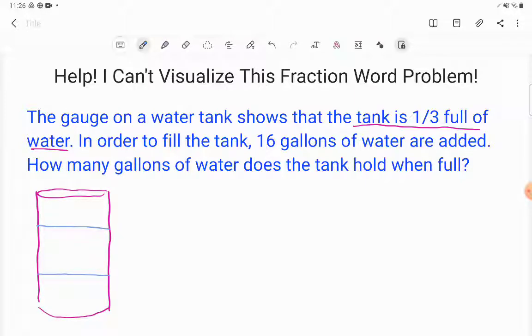One-third, two-thirds, three-thirds. Now, the tank is originally one-third full. So we've got water up to this first line here. Now it says, in order to fill the tank, 16 gallons of water are added.